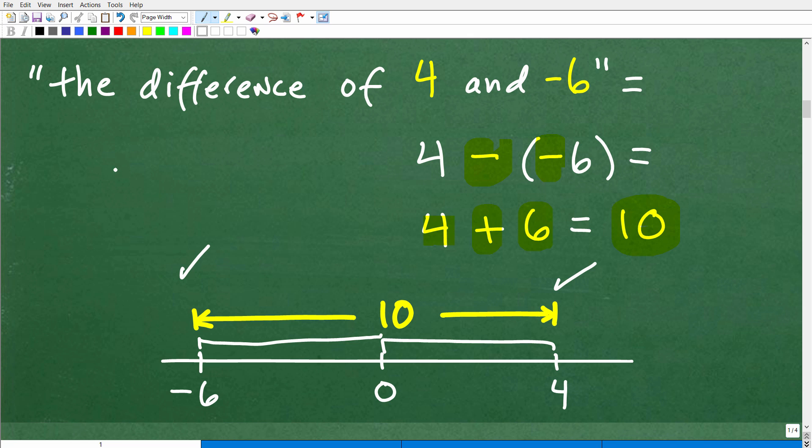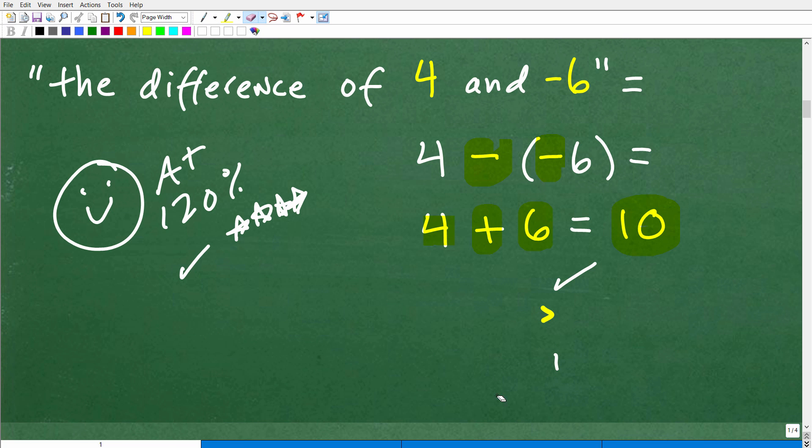And if you got that right, well, then I must go ahead and give you a nice, lovely, happy face and A plus a 120% and give you multiple stars for being such an awesome math student. Now, if you got this incorrect, let's take a look at some answers that some students probably came up with. Okay. And let me go ahead and just erase this real quick. And if you got these, don't feel too bad. Okay. We just recognize your error.